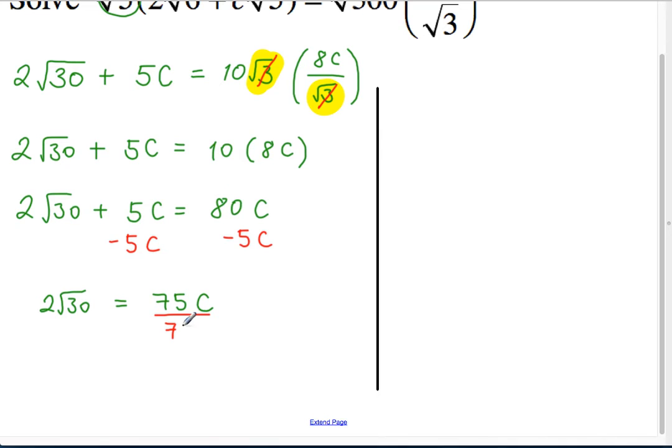And then you get... Divide the right side by 75, the left side by 75. 75 over 75 is 1, so I get 2 root 30 over 75 is equal to c. Excellent.